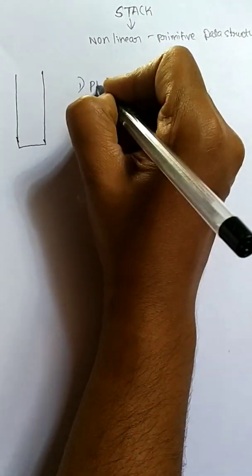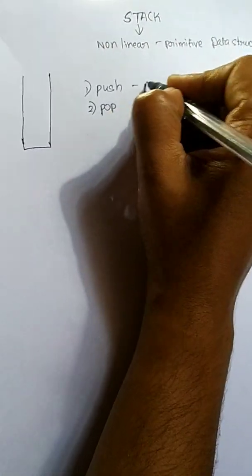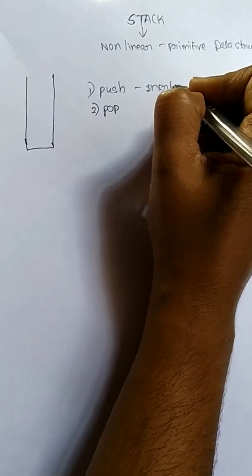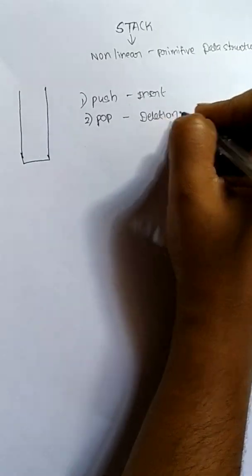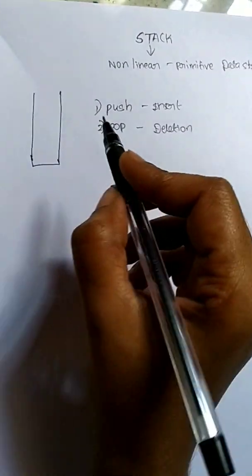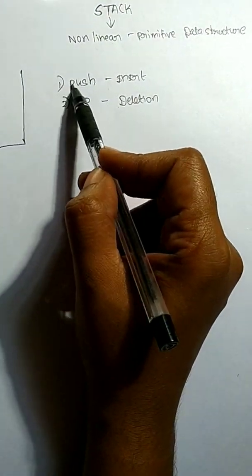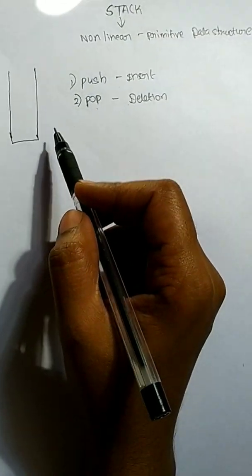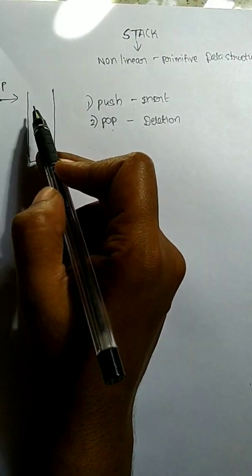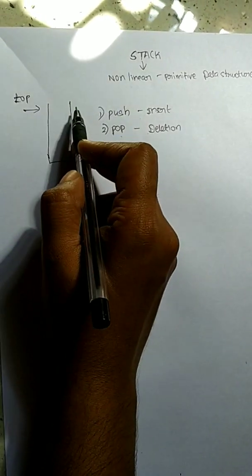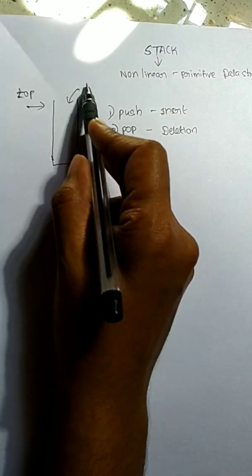We will be having two operations: push and pop. Insertion of an element is called push in a stack, and deletion of an element in a stack is called pop. We have a top pointer which always points to the top of the stack. Elements will be pushed in or popped out only at one end.